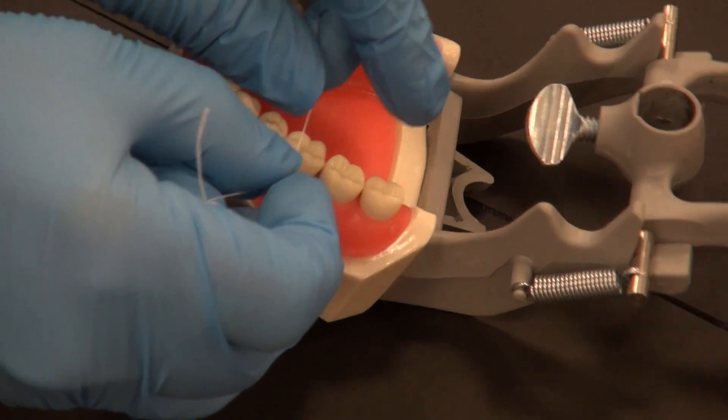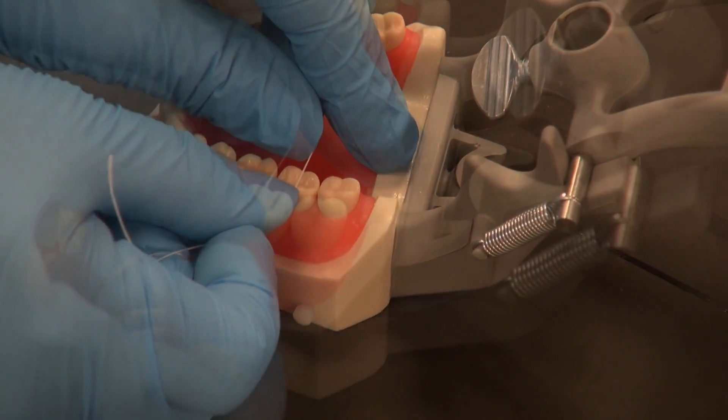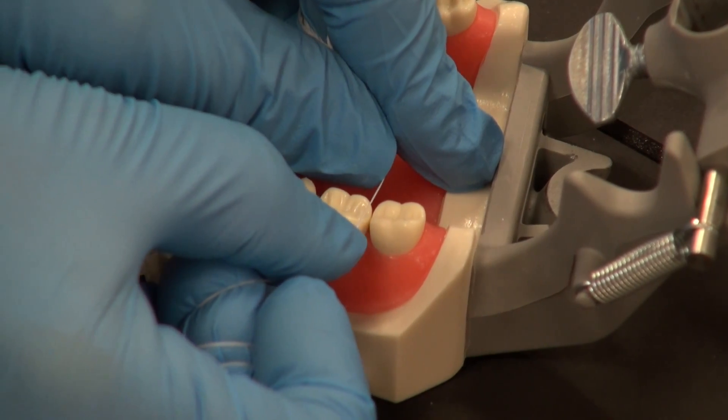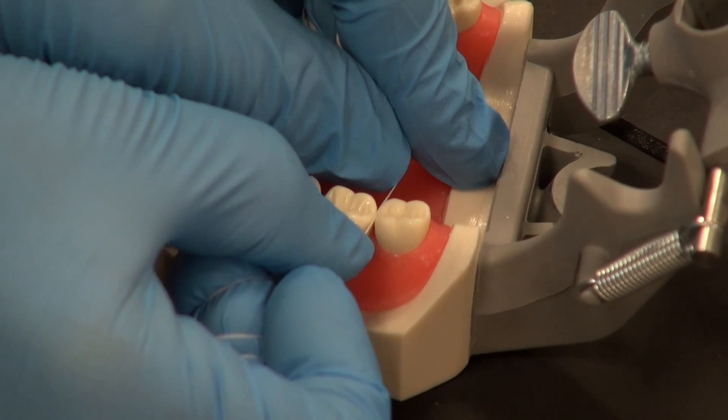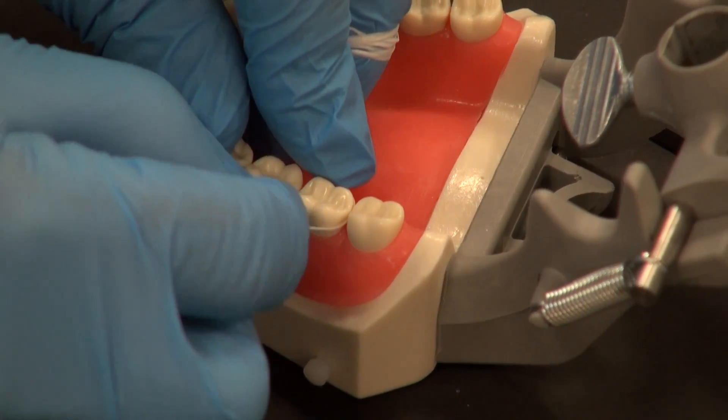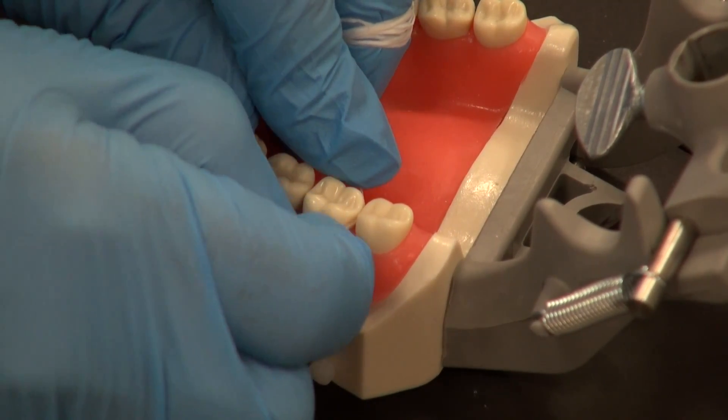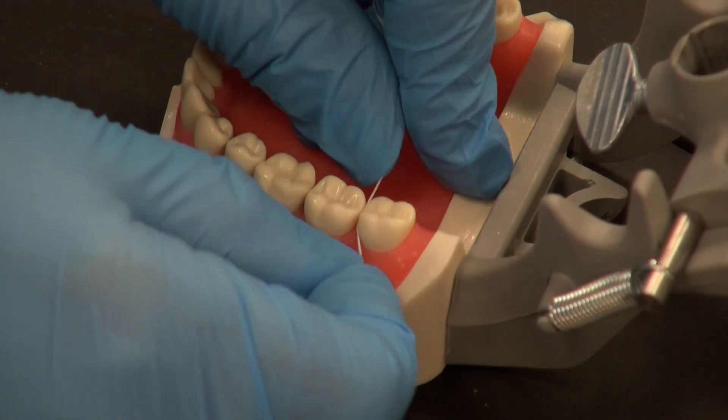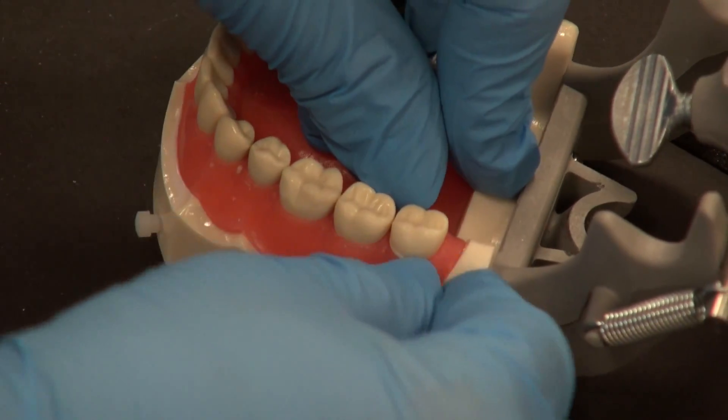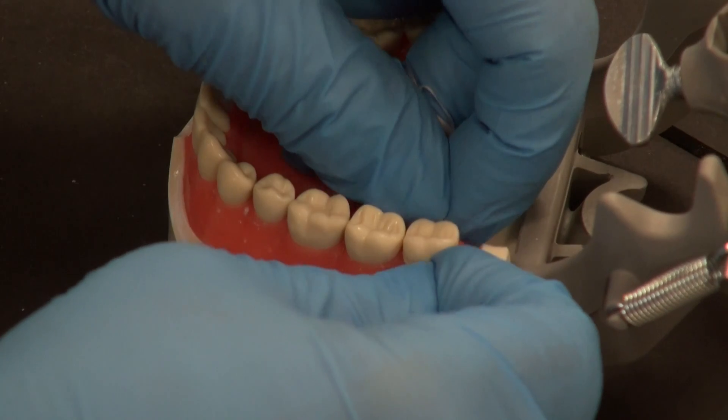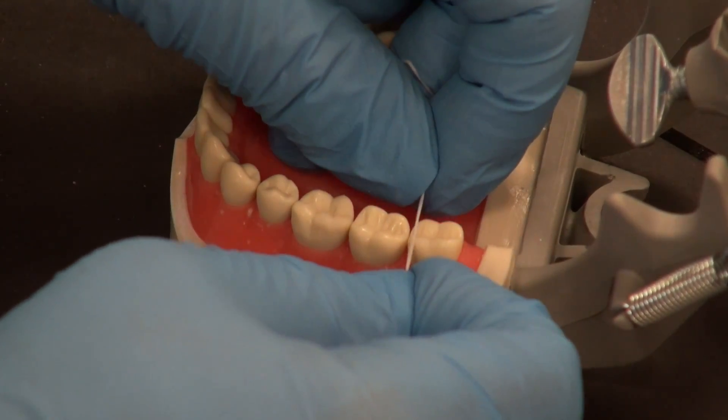Now we're going to go in between the teeth where there's contacts. I have a clean piece of floss now. I'm going to go in between teeth with two contacts, seesawing in between the teeth, going in a good C and up and down three times. One, two, three. And then I'm going to come up and over the papilla without coming out. One, two, three. And seesawing out.